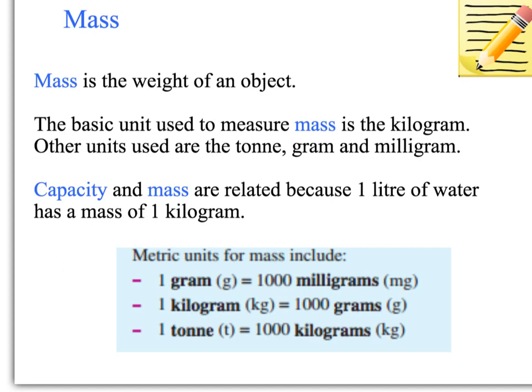I also want you to make sure that you write down and remember this box here. So these are the different units of mass. One gram equals 1,000 milligrams. One kilogram is 1,000 grams. And one ton is 1,000 kilograms. Please write those down and make sure that you remember those.